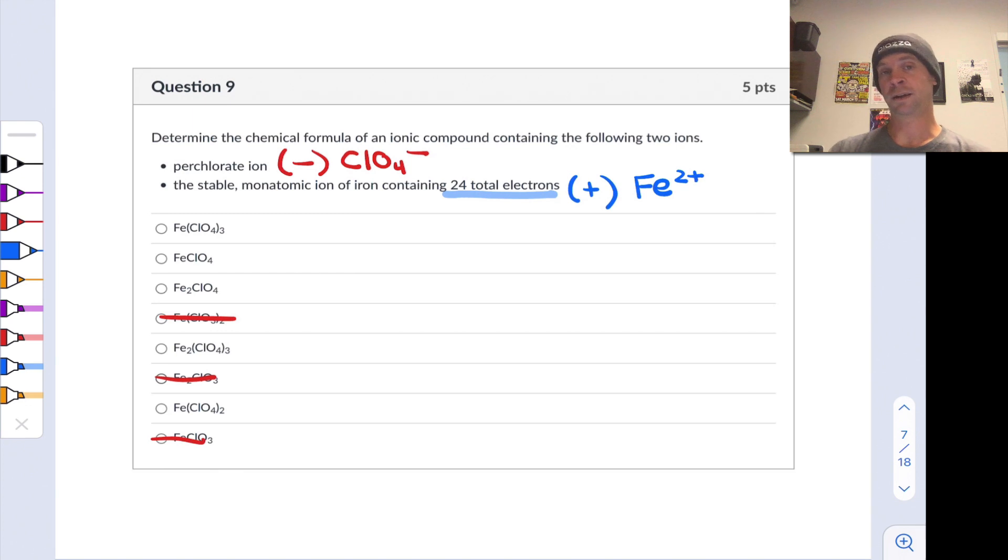Finally, to complete the problem, we need only realize that in the neutral ionic compound, the charges will balance. So if I have a charge of 2+ as a result of the iron 2 cation, I need the anions to have a net or total charge of negative 2. So I need 2 perchlorate ions per iron 2 cation. This makes Fe(ClO4)2 right here the correct formula for this ionic compound. We can rule out the others because we've logically made our way to the conclusion that the compound is Fe(ClO4)2.